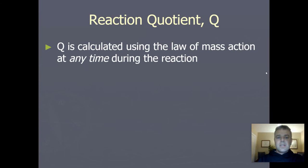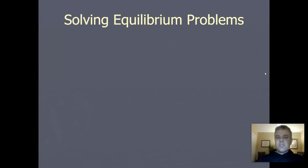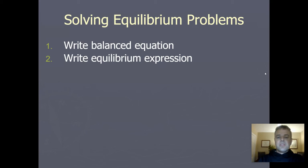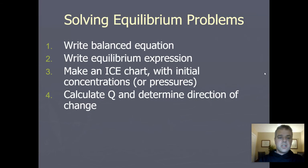So we talked already about the reaction quotient Q and what that has to do with shifts in equilibrium. I want to go back to this solving equilibrium problems slide about the general process. You write your balanced equation, you write an equilibrium expression, you make an ICE chart with initial concentrations or pressures. You don't put moles, you put molarities or pressures if you're doing KP in an ICE chart.